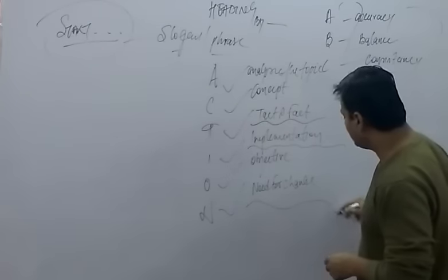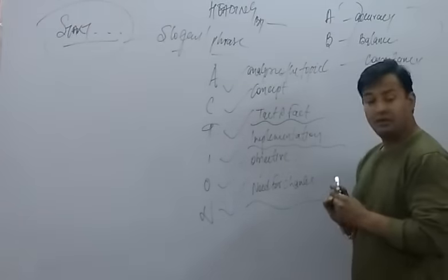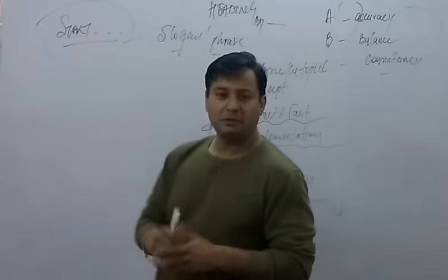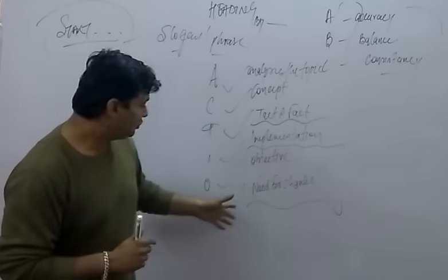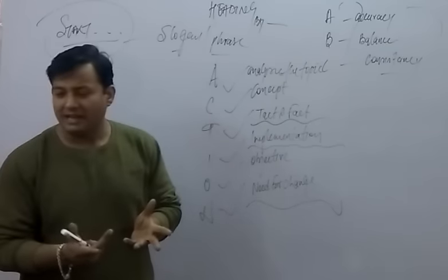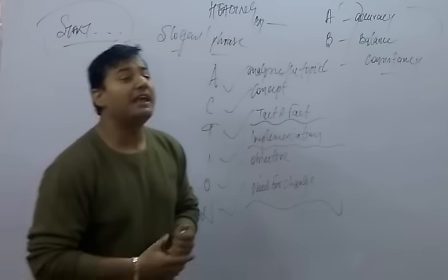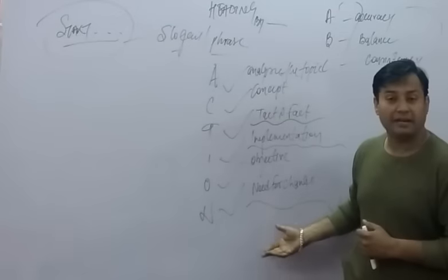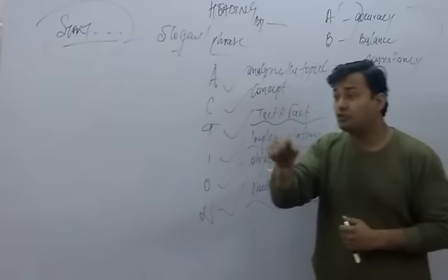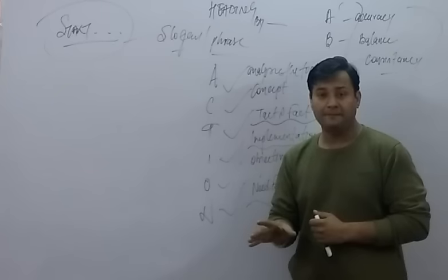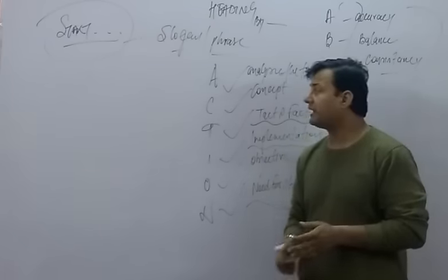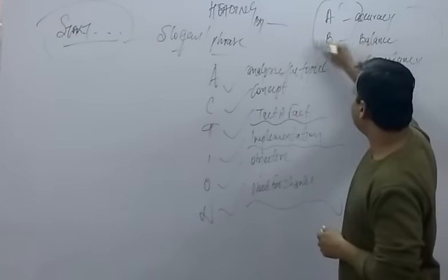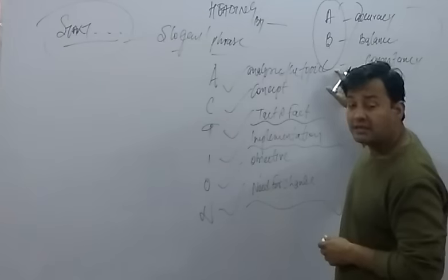And then, the last, somebody says, need for the change. What does mean need for change? You have to mention at the end that you want to change that thing. Exactly. And make sure, while writing the article from A to N, you need to follow A, B, C. Don't forget this. This is the key.